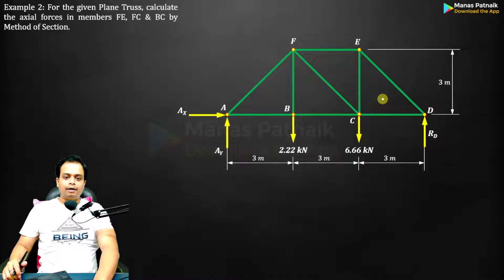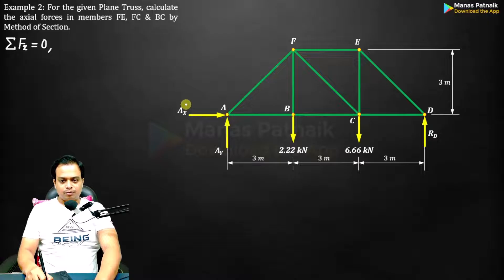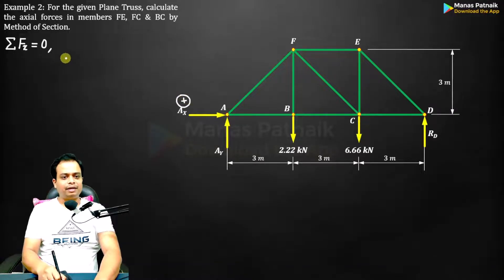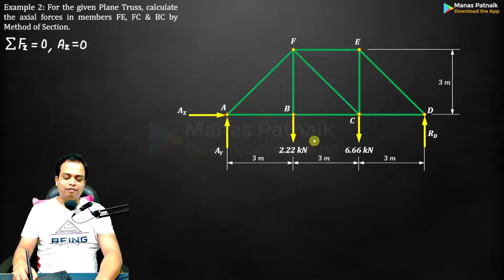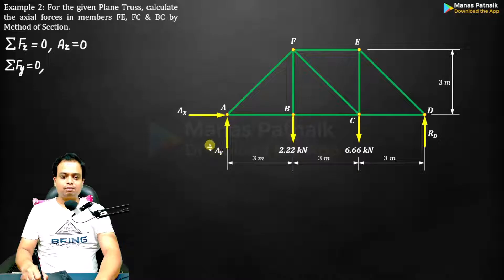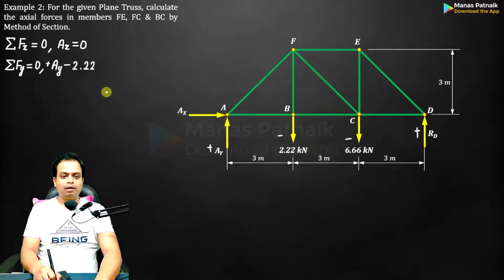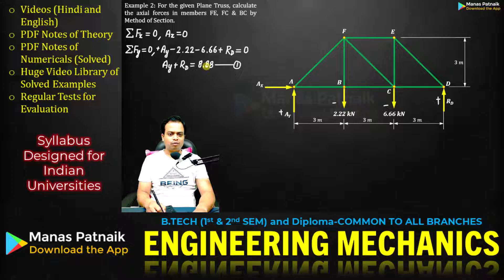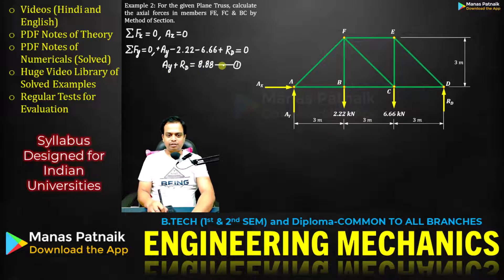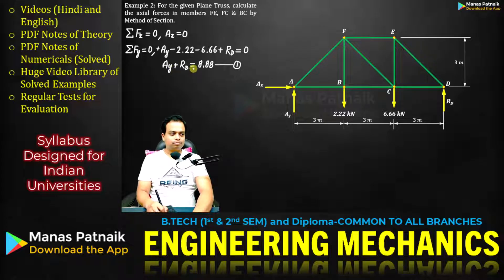Now go for FX=0. As you can see, there is only one horizontal force, so simply write AX=0. If you go for summation FY, these are the forces: positive, negative, negative, positive. Write them down and try to simplify it as much as you can. As you can see, there is only one equation and two unknowns.